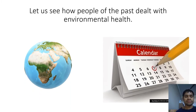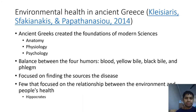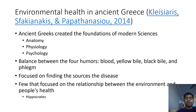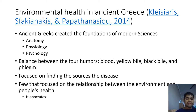Now let's go over to the history of environmental health starting with the ancient Greeks. They created the foundations for modern anatomy, physiology, and psychology. They also wanted to find the balance of good health through the four humors of blood, yellow bile, black bile, and phlegm, and to find the source of disease.